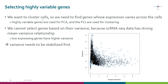Our ultimate goal is to cluster cells based on their expression profiles. Therefore, we need to find genes whose expression varies across the cells. These highly variable genes will be used for principal component analysis, and then the principal components we find will be used for clustering. So first we need to find the highly variable genes.